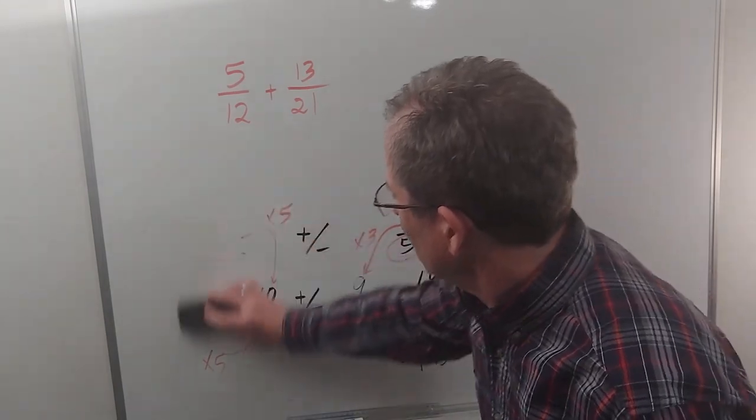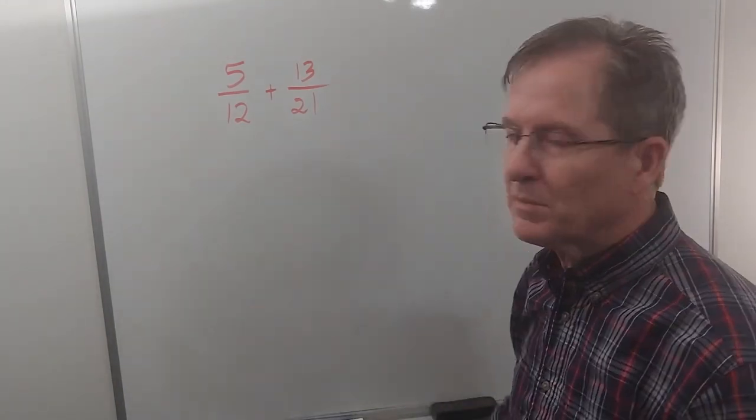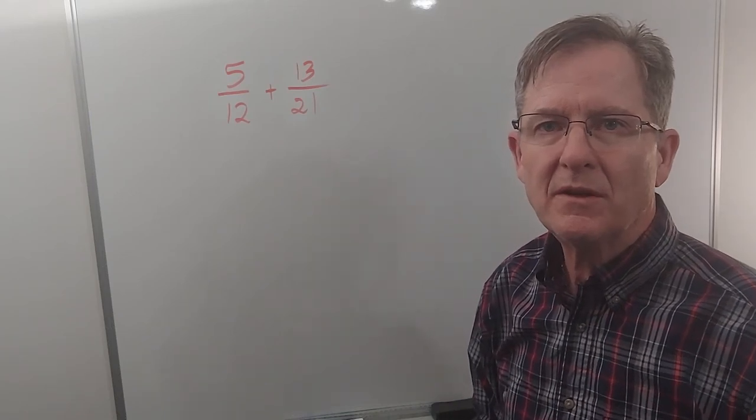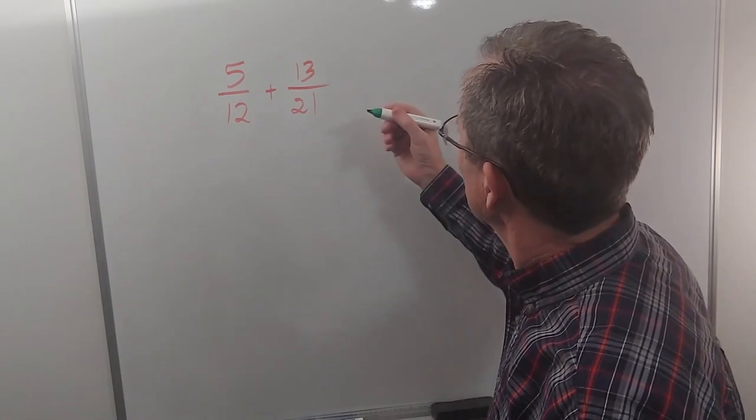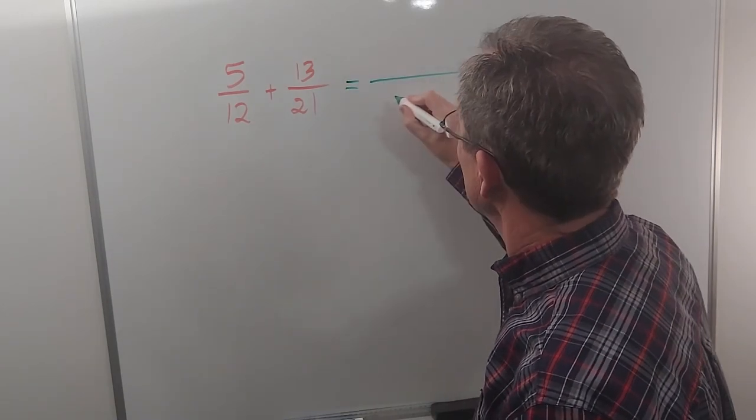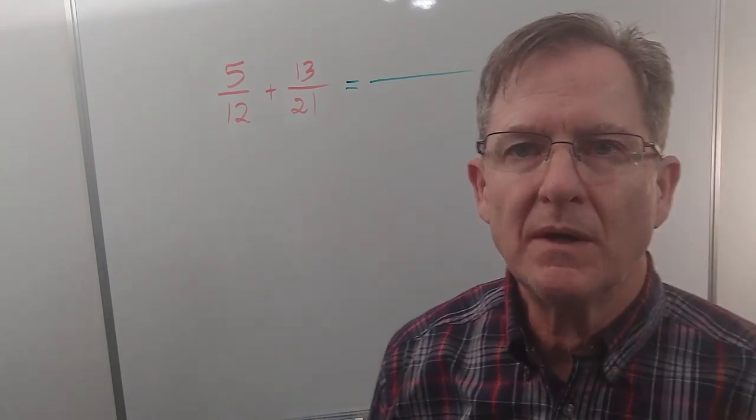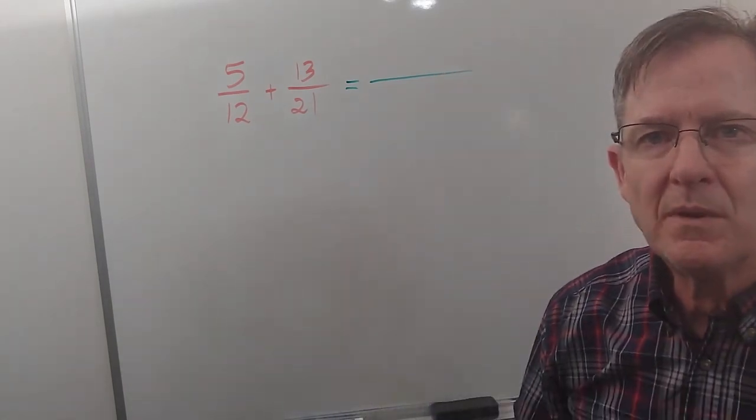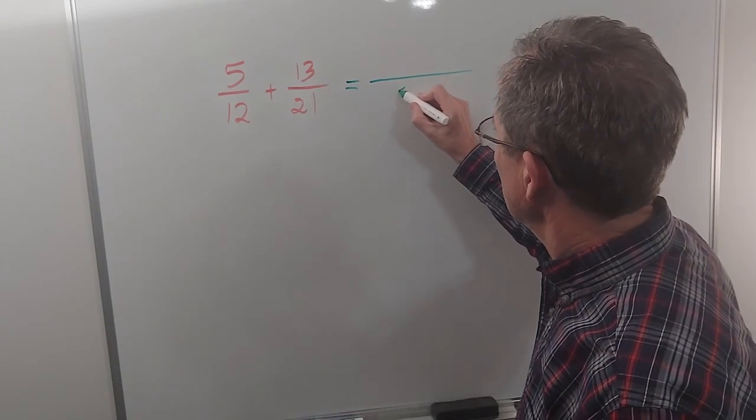However, what happens if you have something like 5/12 plus 13/21? You can just multiply the denominators. 12 times 21, well let's see, 10 times 21 is 210, 2 more 21 is 42, 210 plus 42 is 252. So you could do that.